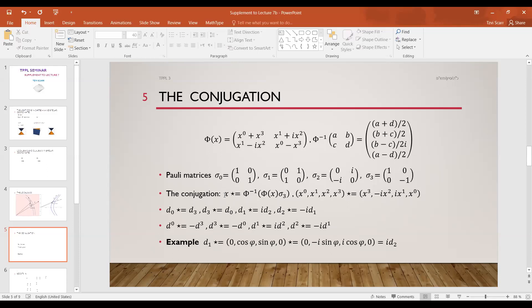And the conjugation was defined in the following way. The conjugation applied to a four-vector x: first you compute phi of it, means you build this matrix, you multiply on the right by sigma 3, and then pull it back to the four-vector using the phi inverse. So you'll get x3, minus x2, i x1, and x0.